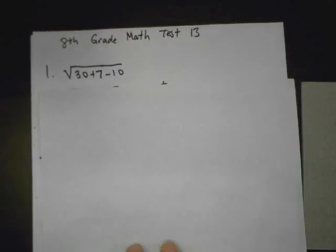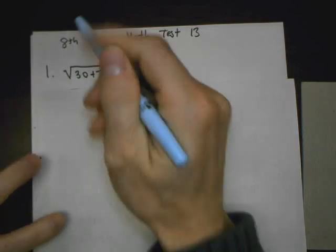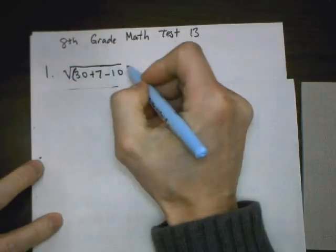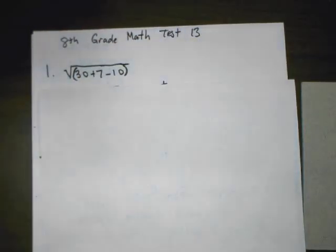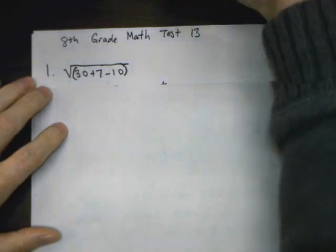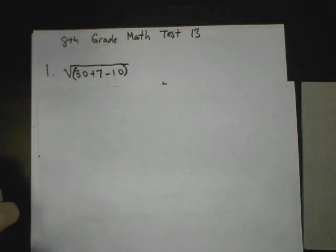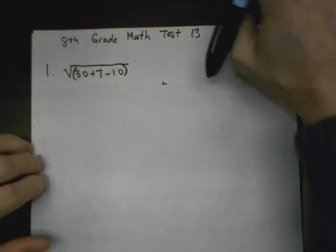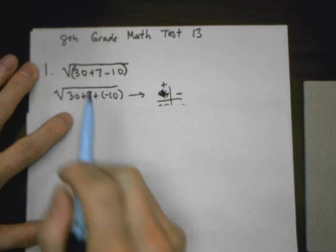Eighth grade math, test 13 study guide. Problem number one says: which range contains the value of the square root of 30 plus 7 minus 10? What we do is we want to simplify that radicand, the number inside the square root.